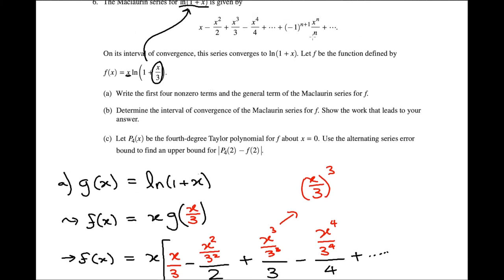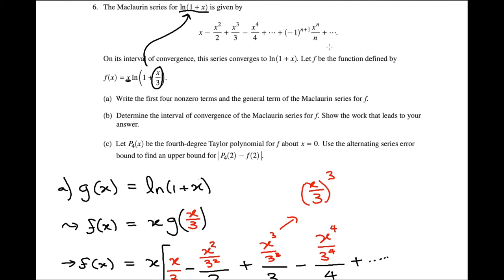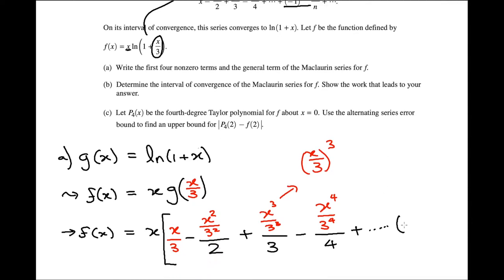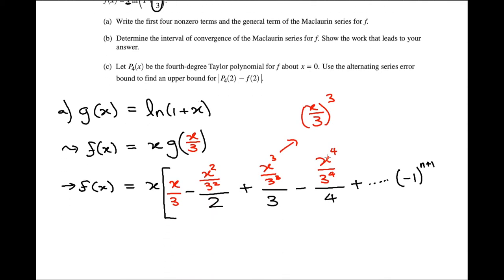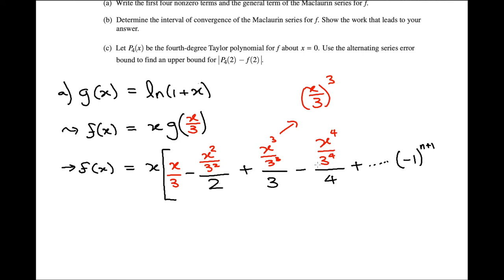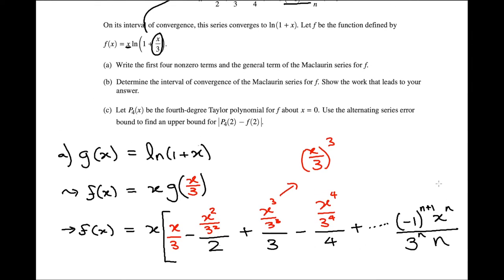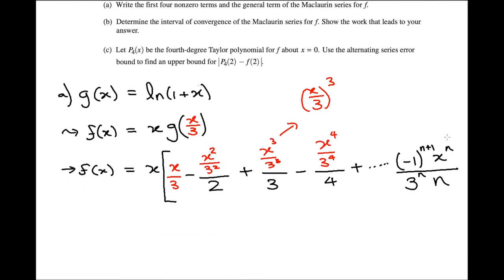Now we have to deal with the nth term. The (-1)^(n+1) does not change — that stays the same. What does change is the rest of it, because we no longer just have x^n, but we have x^n divided by 3^n. You can see we have 3¹ here, 3² here, 3³ here, 3⁴ here. So we're dividing by 3^n, and then we have times n there.